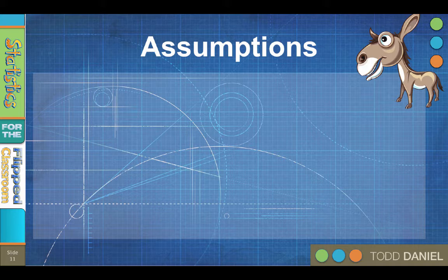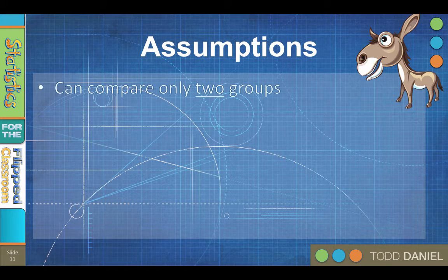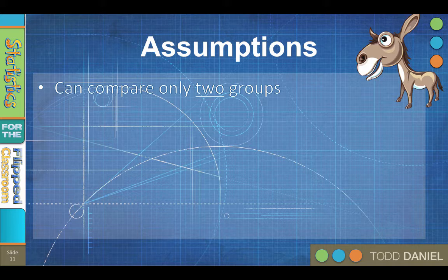One that absolutely must be true is that, to use an independent samples t-test, you must have only two groups. No more, no less. Only two groups.